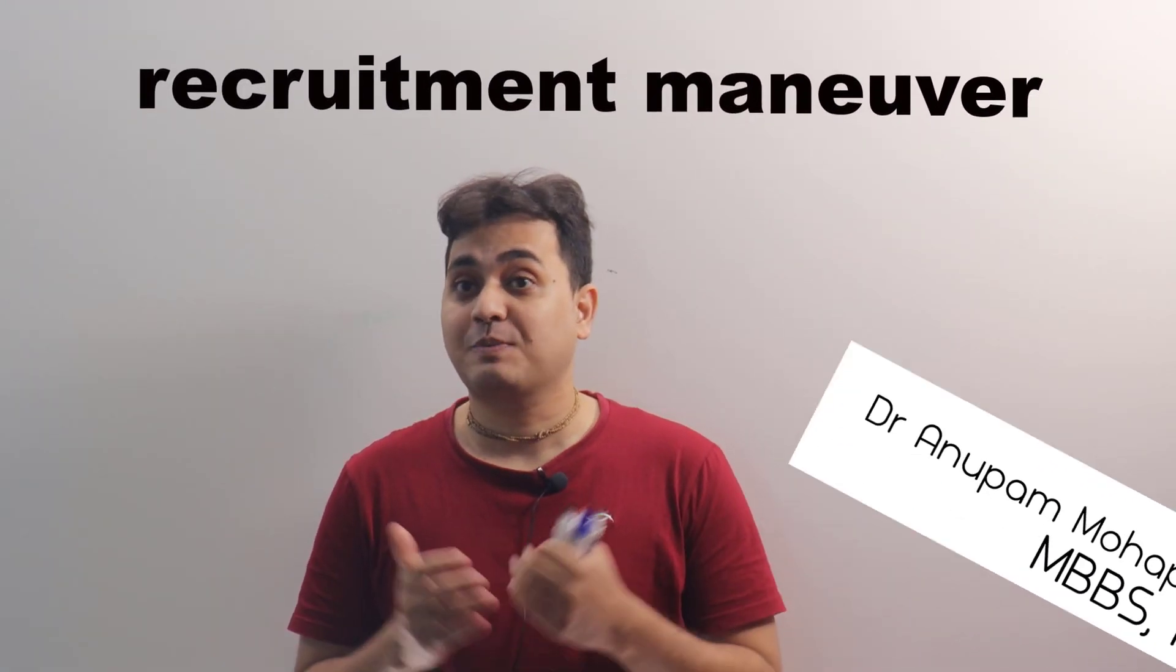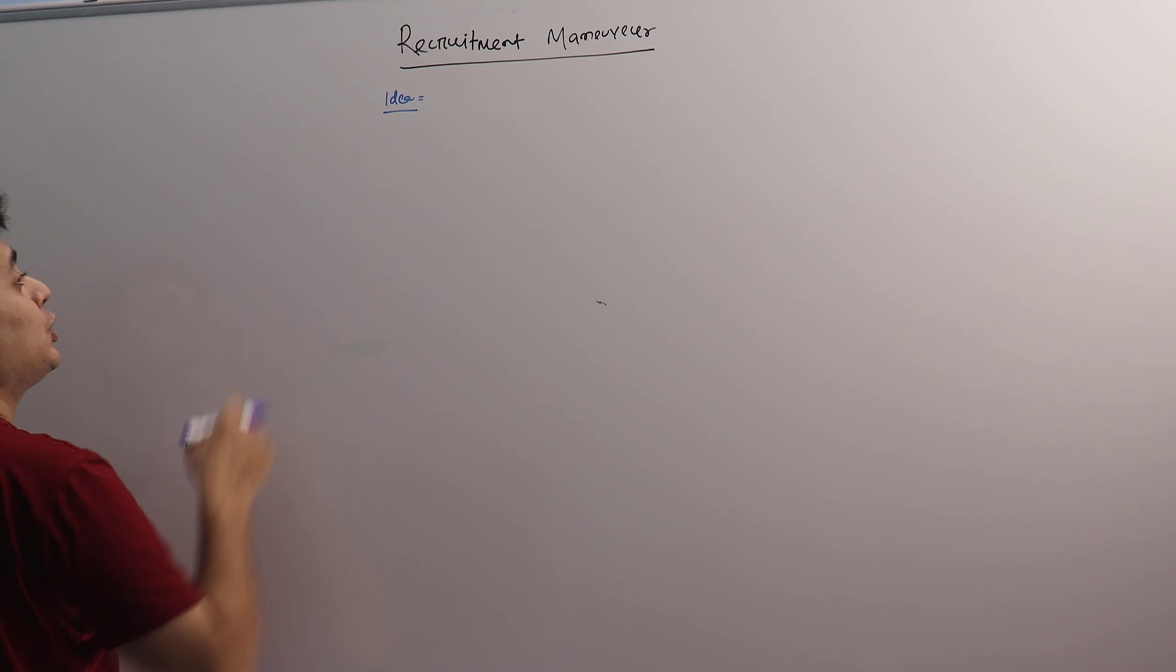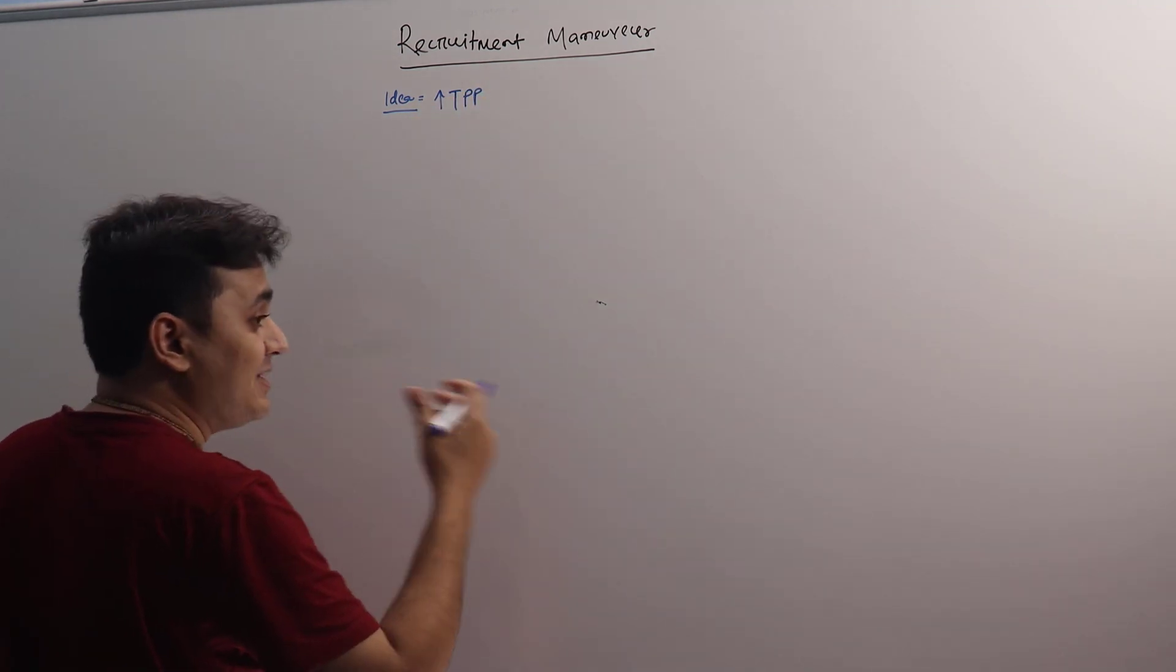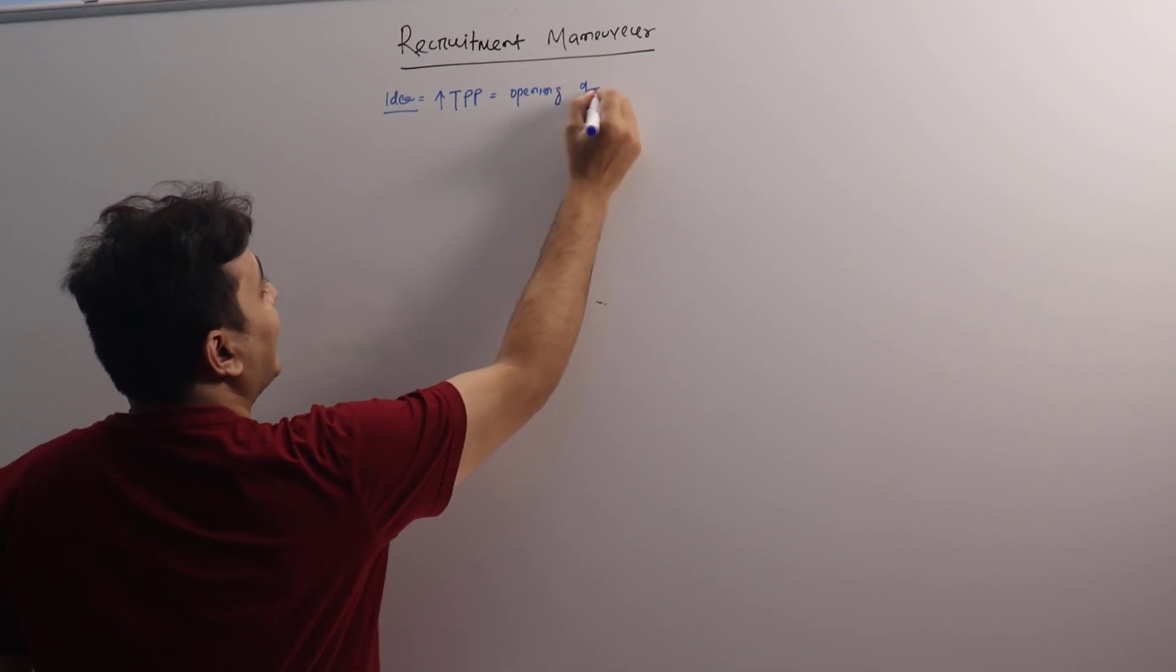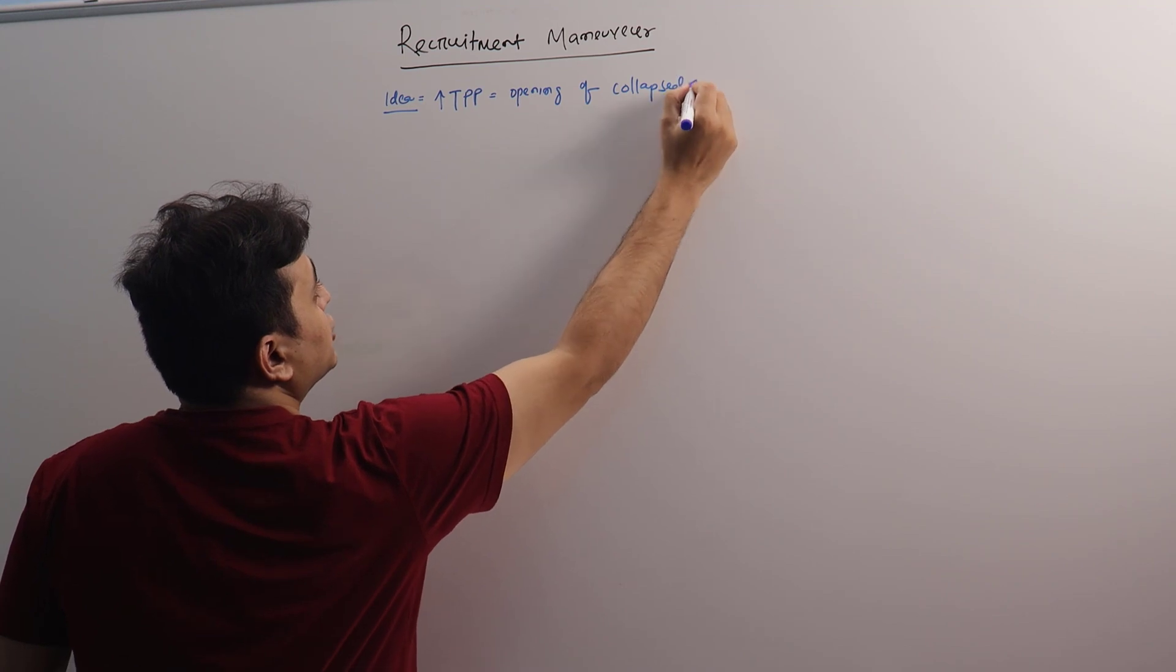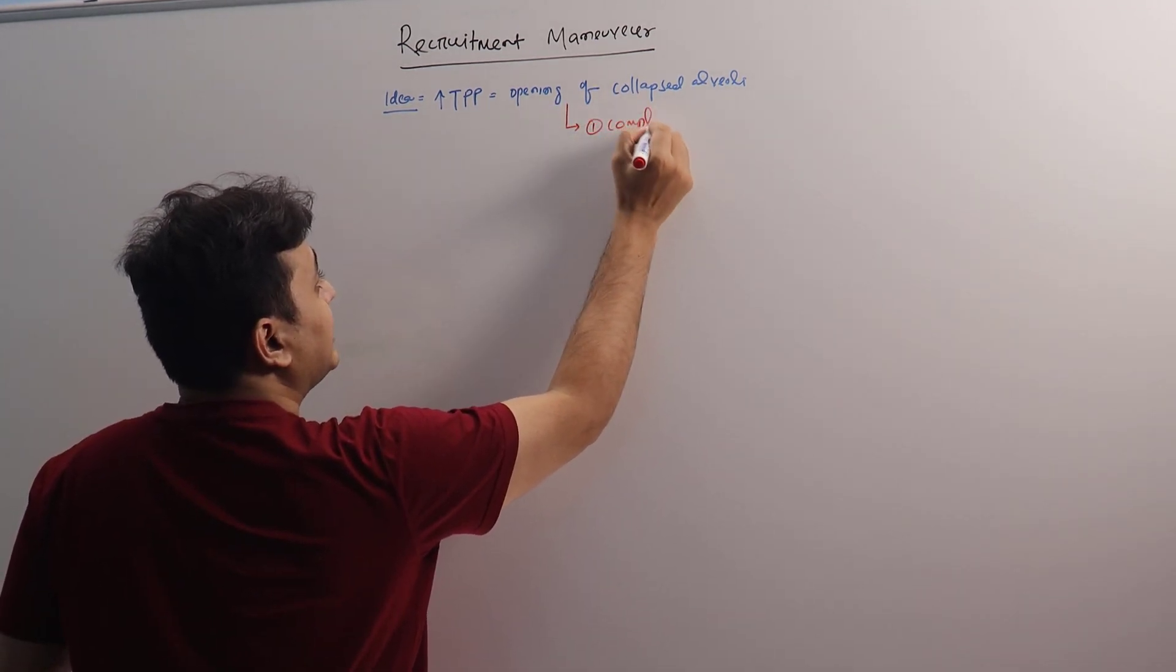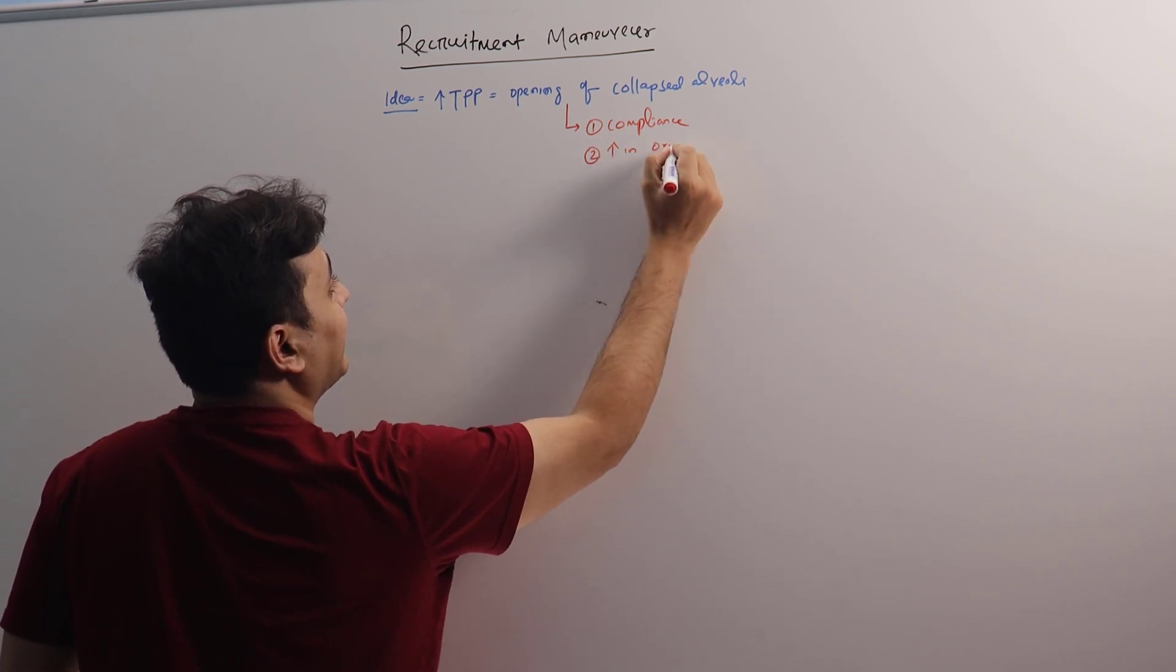Hello everyone, today we will be discussing the recruitment maneuver that you do in an ARDS patient, especially when there is refractory hypoxemia. The idea behind the recruitment maneuver is by giving it, we intend to increase the transpulmonary pressure, which is the difference between the alveolar pressure and the pleural pressure. When transpulmonary pressure increases, there will be opening of collapsed alveoli. When the collapsed alveoli open, the compliance will improve and there will be increase in oxygenation.